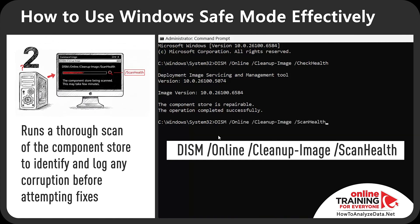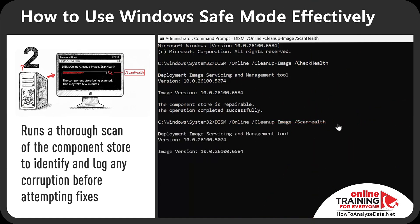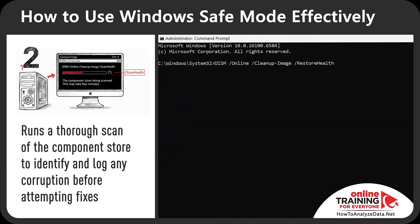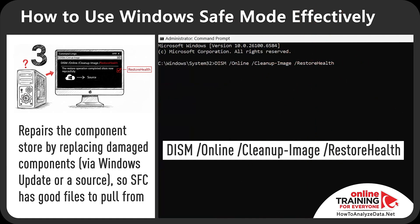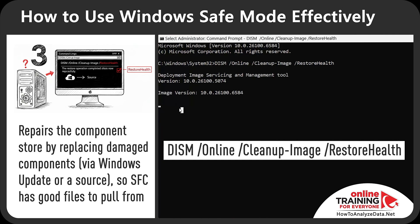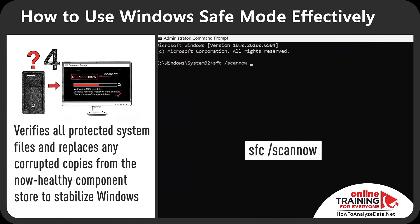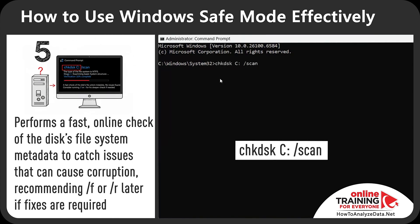The ScanHealth switch runs a thorough scan of the component store to identify and log any corruption before attempting fixes. In the third step, I'll run DISM with the /RestoreHealth switch, which repairs the component store by replacing damaged components using Windows Update as a source. This gives SFC good files to pull from. You can then run SFC /scannow, which verifies all protected system files and replaces any corrupted files from the now-healthy component store to stabilize Windows.